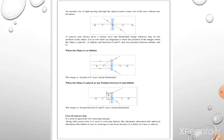An incidence ray of light passing through the optical center comes out of the lens without any deviation. ये बात हम लोगों ने convex lens के time पर भी study की थी - जब rays of light optical center से होके निकलती है, तो उसमें किसी भी तरह का विचलन नहीं आता, वो अपने path से straight निकल जाती है.